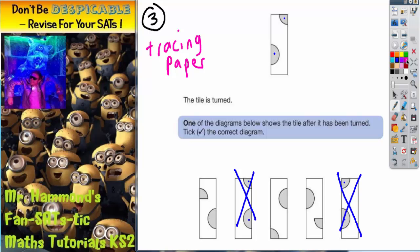The other clue we've got is that this quarter circle here is in the corner of the shape. Now when you rotate it, it's still going to be in the corner. So if it's not in the corner, it can't work.